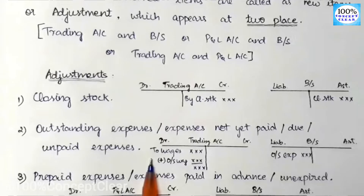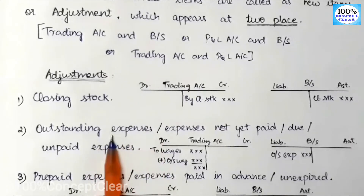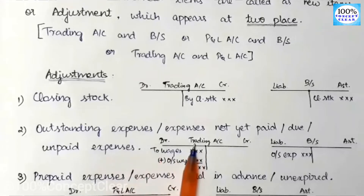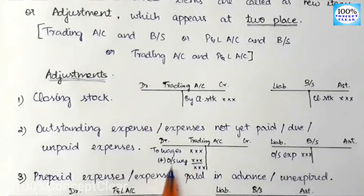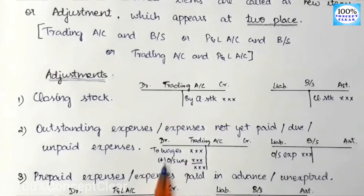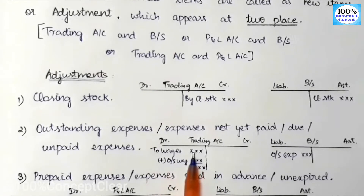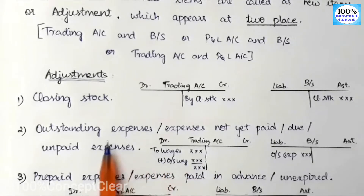If rent is in the P&L account, we add the original amount of rent plus the outstanding rent. We add the outstanding expenses to the debit side of the P&L account. We adjust the outstanding wages in the trial balance and add outstanding wages to the account. In the same way, we add all outstanding expenses items: outstanding wages, outstanding salaries, outstanding rent.